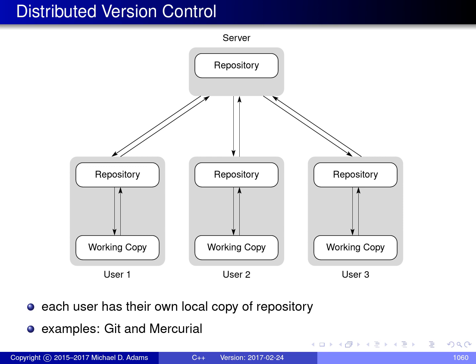The other approach to version control is what's known as distributed version control. What sets distributed version control apart from its centralized counterpart is that in the distributed case, everyone has their own copy of the repository — the repository is replicated. You might still have a server for convenience of access, but in addition, each individual user also has their own local copy of the repository. From this local repository, they can then access subsets of information, which become their working copy.